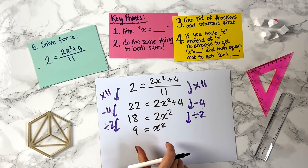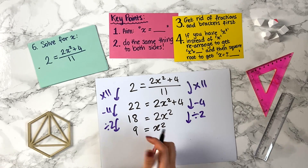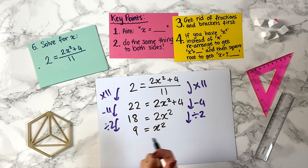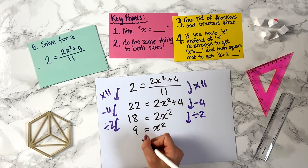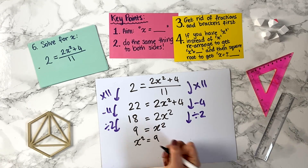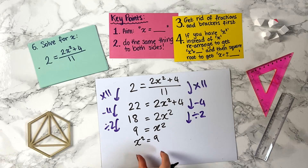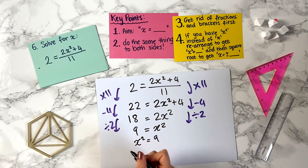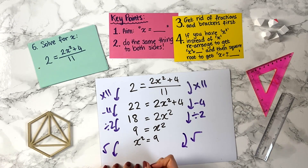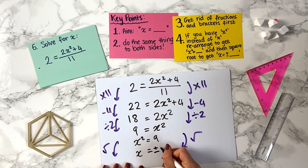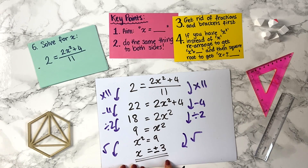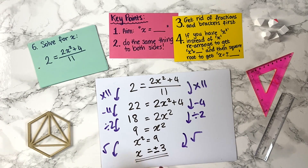We can swap the sides for clarity: x squared equals 9. To undo the squared, we square root both sides: the left gives x, and the square root of 9 is 3 — but we need plus or minus. So x equals ±3, meaning x equals plus 3 or x equals minus 3. Both work, and you need to be clear that there are two solutions.